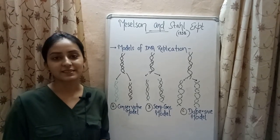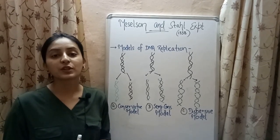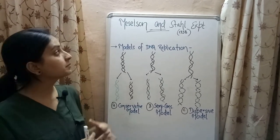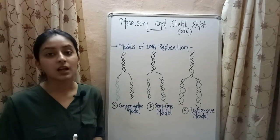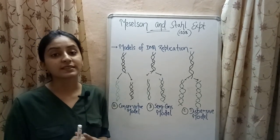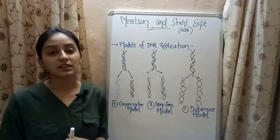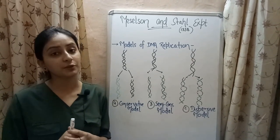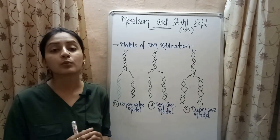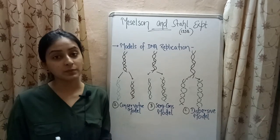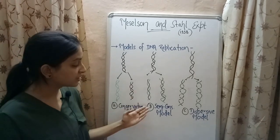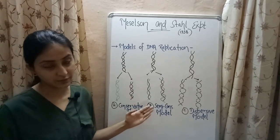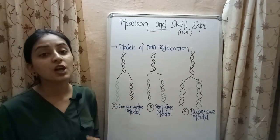Welcome to Biology at Ease. In this video, I will be explaining the Meselson and Stahl experiment. Matthew Meselson and Franklin Stahl in 1958 provided the experimental proof that DNA replication is semi-conservative in nature.